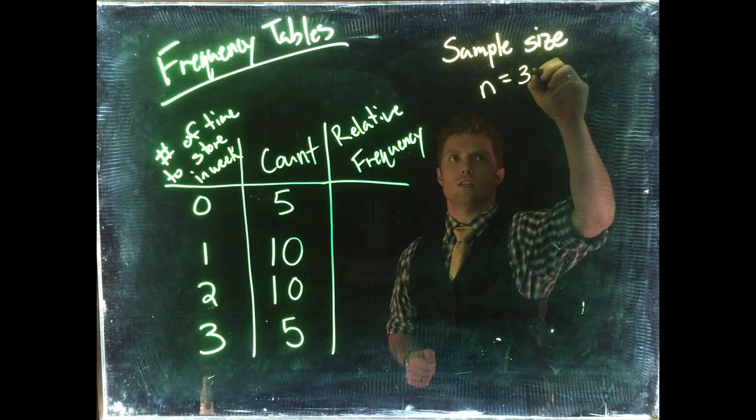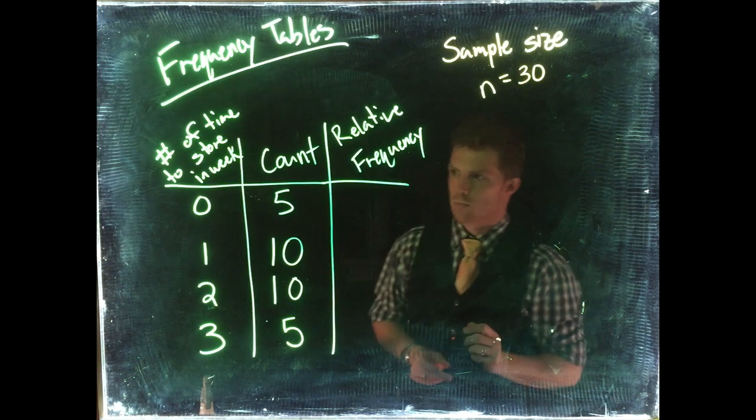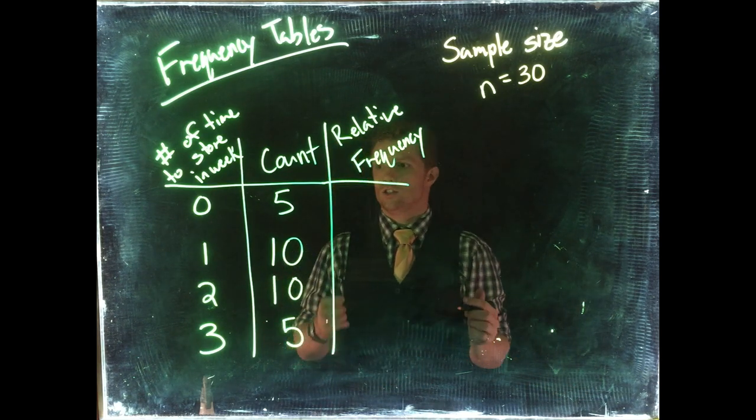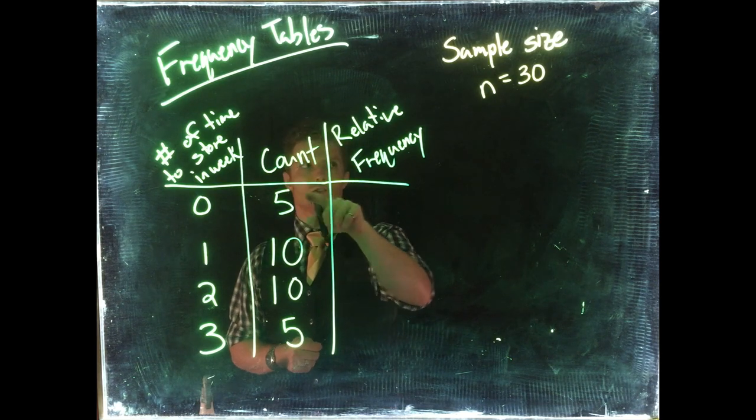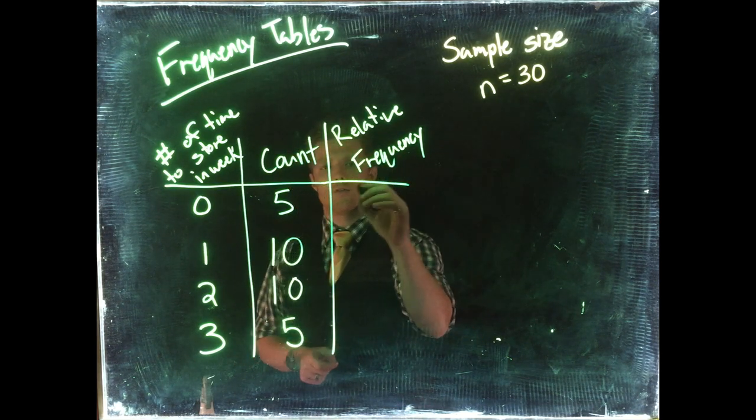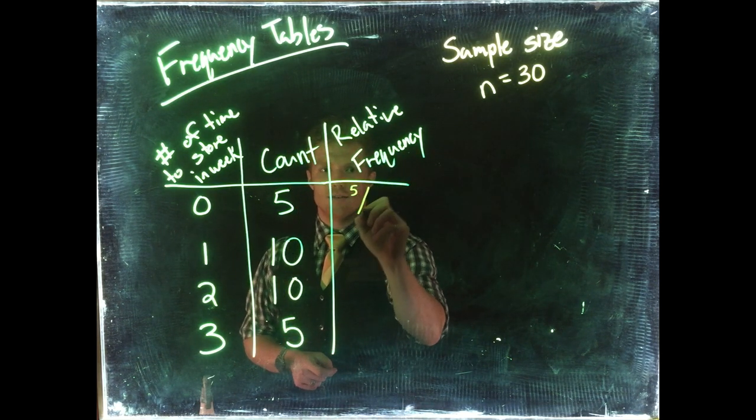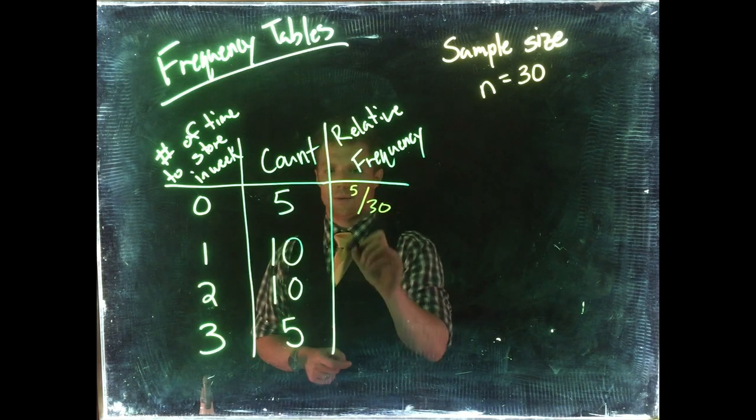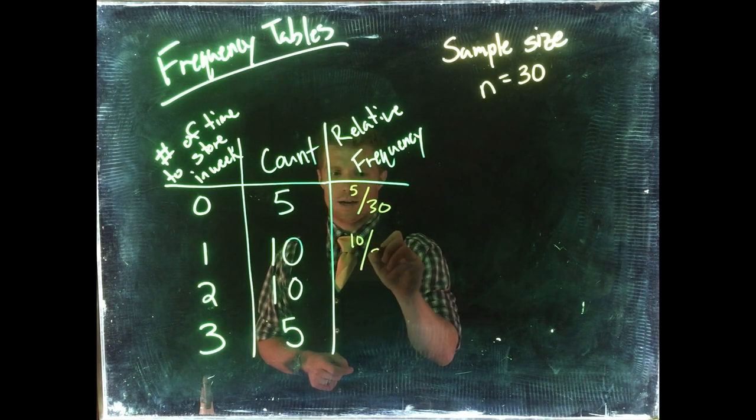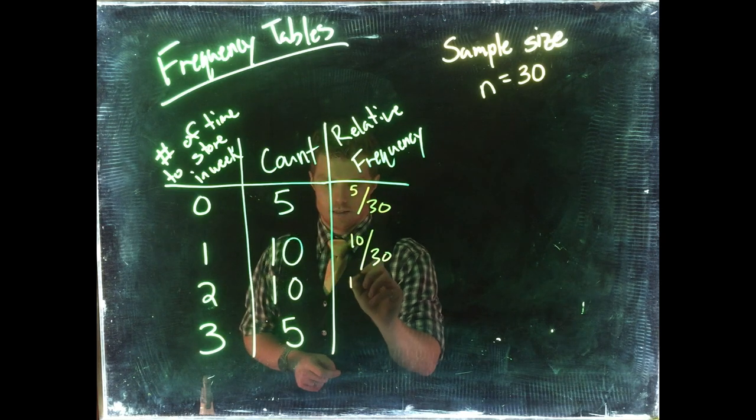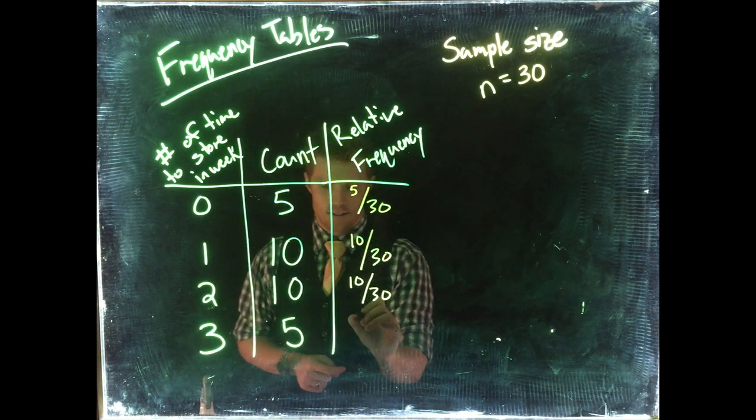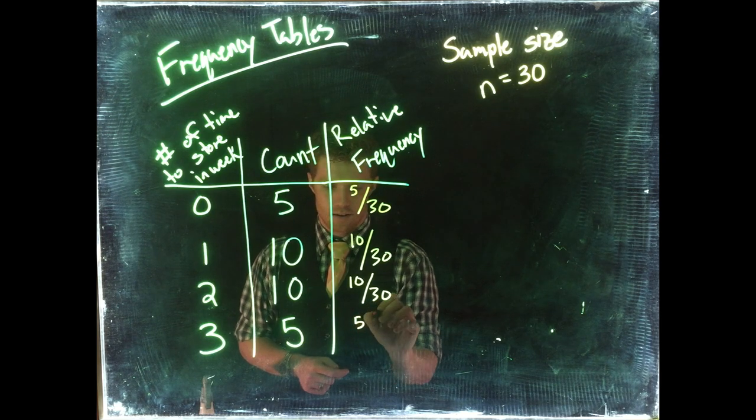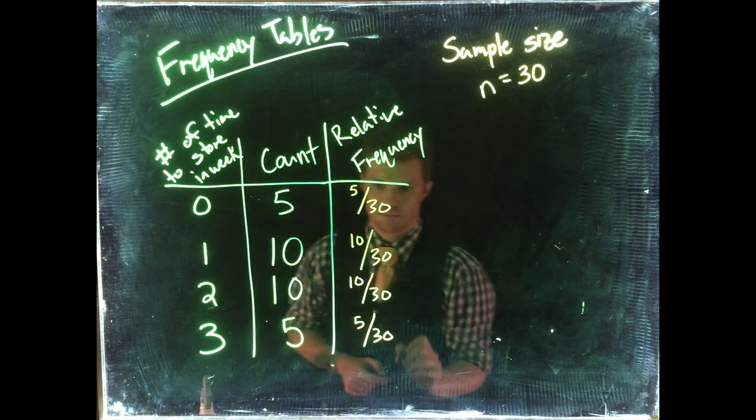The relative frequency is just the amount for an individual case, the number of counts divided by the total. So relative frequency here would be 5 divided by 30, then we'd have 10 divided by 30, 10 divided by 30, and then again 5 divided by 30.